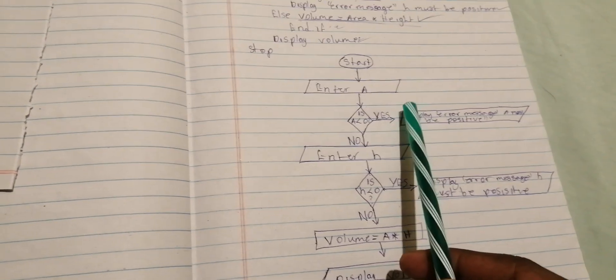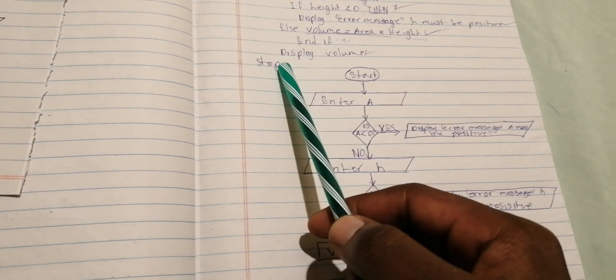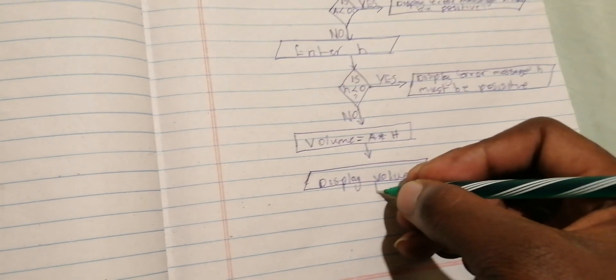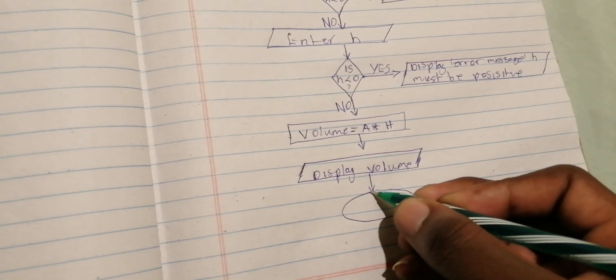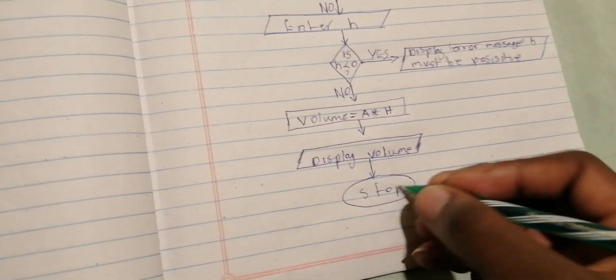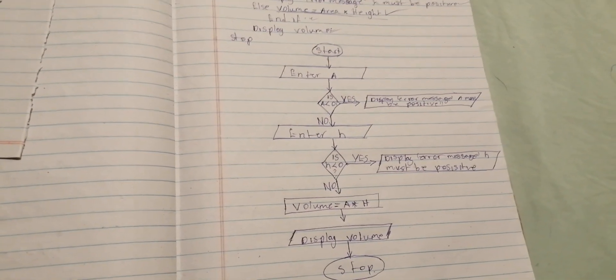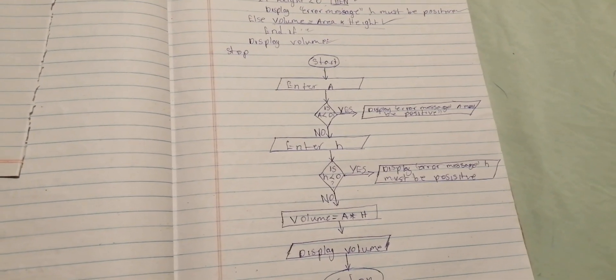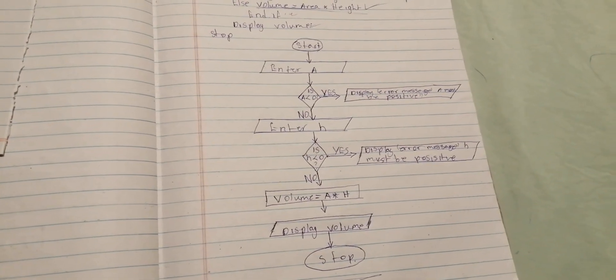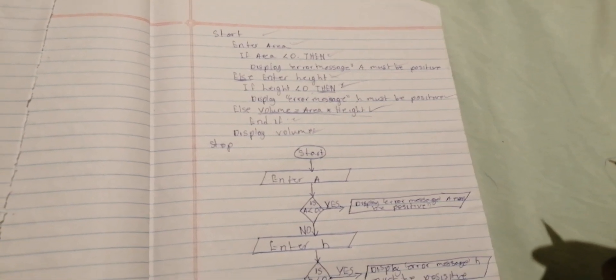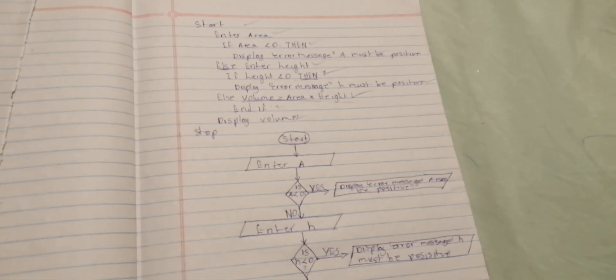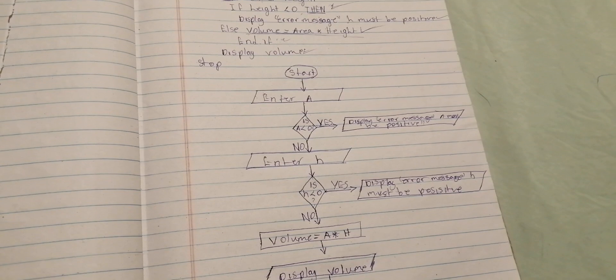The final step is 'Stop'. Start and Stop are both associated with an oval shape, so you draw an oval and inside it write 'Stop'. That's how you draw the corresponding flowchart. This is from the 2019 GC exam. Feel free to drop questions in the comments, don't forget to subscribe, and thanks for watching.